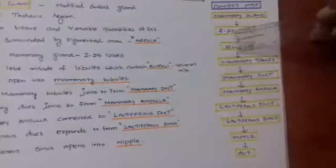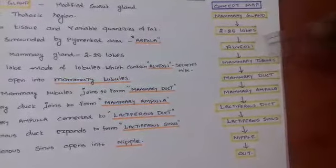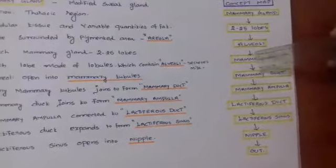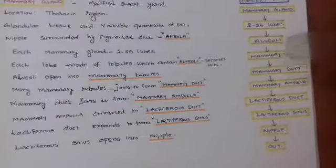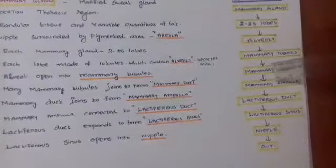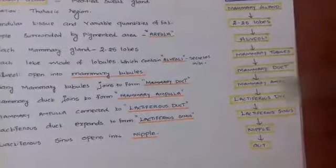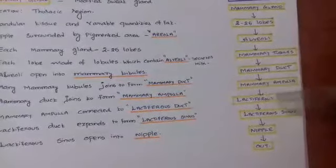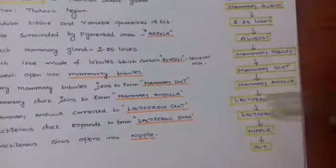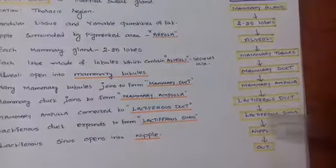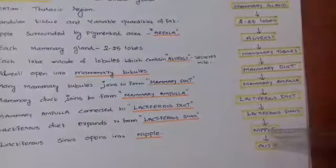All the alveoli join together to form mammary tubule. The mammary tubule joins to form mammary duct. The mammary duct leads to mammary ampulla, which leads to lactiferous duct. The lactiferous duct leads to lactiferous sinus. Lactiferous sinus leads to nipple, through which the milk comes out.